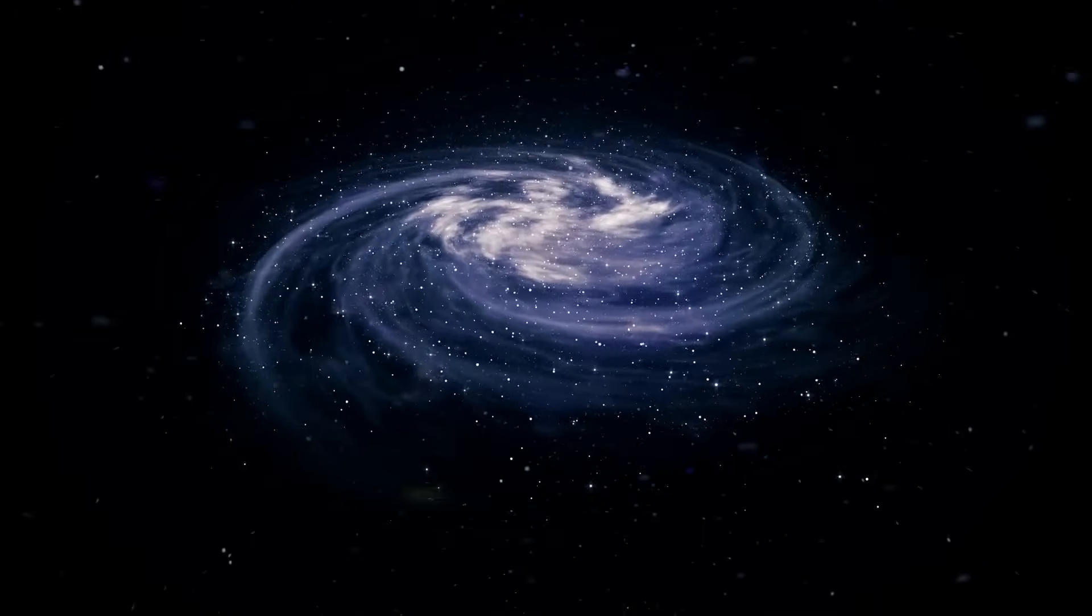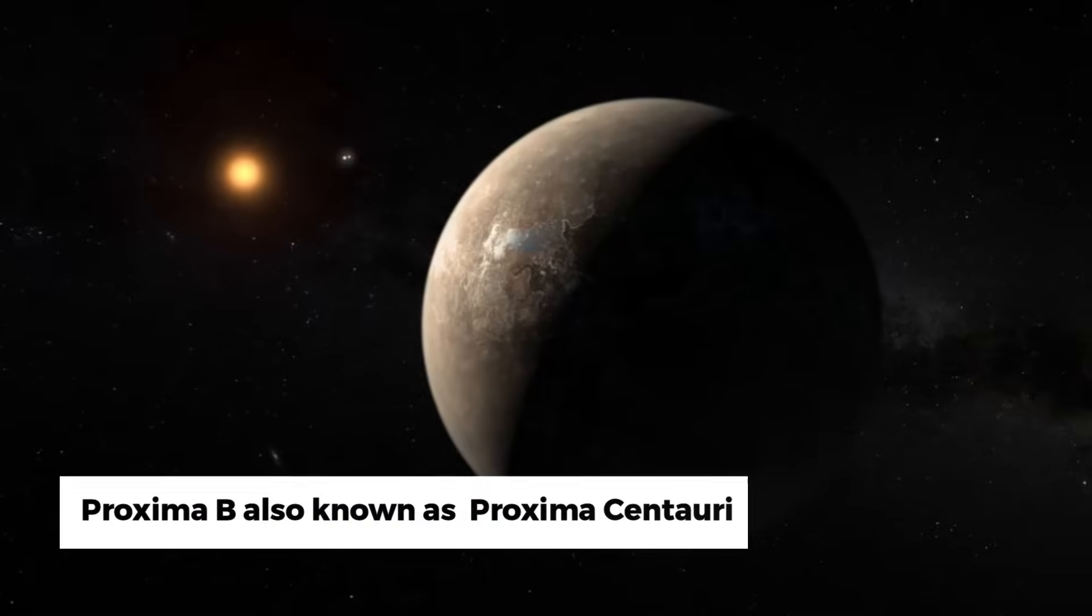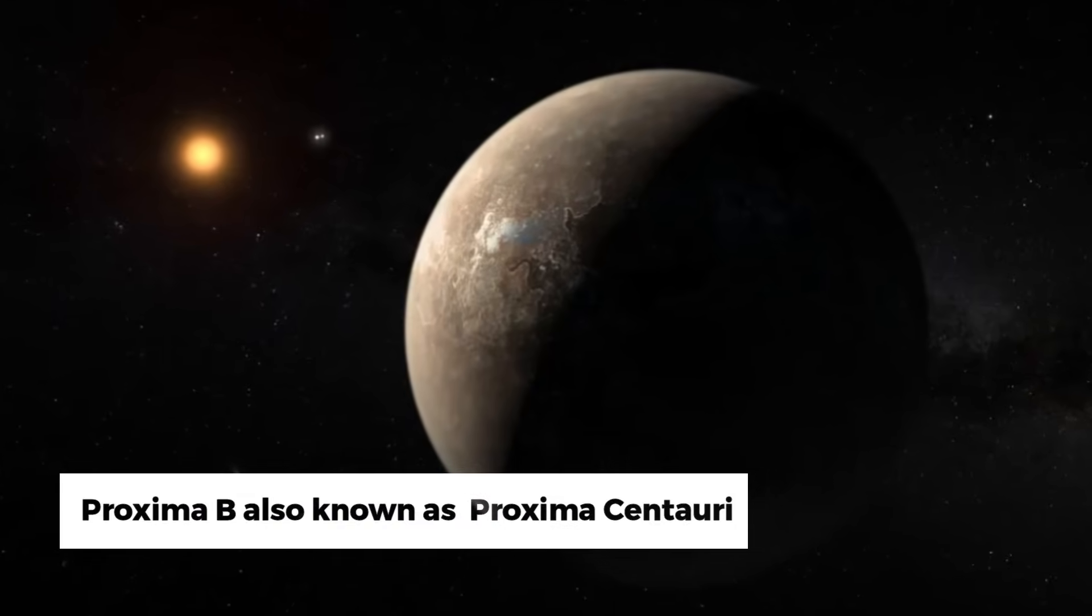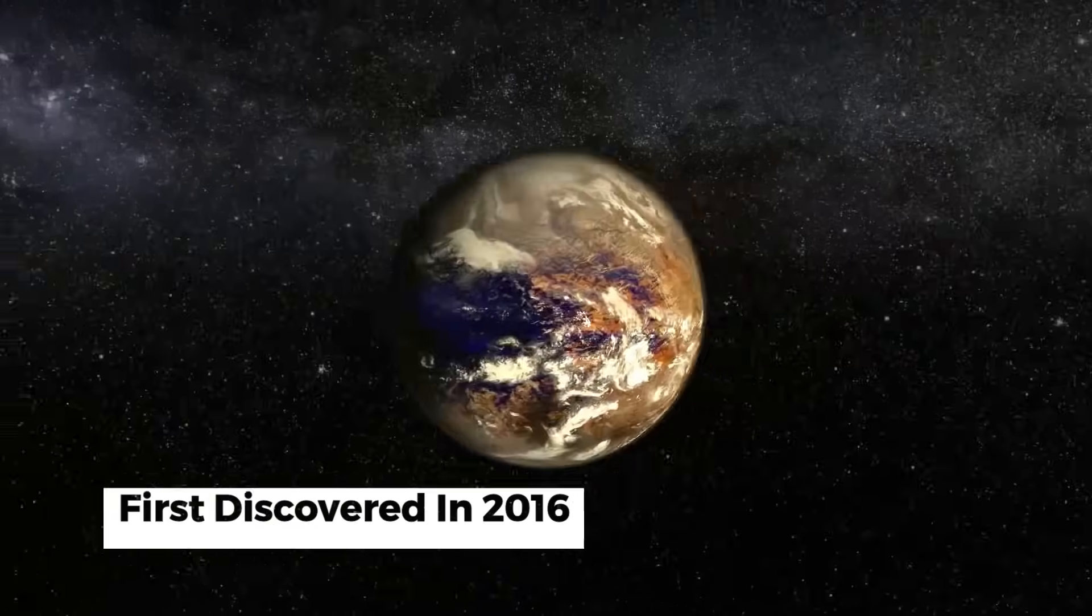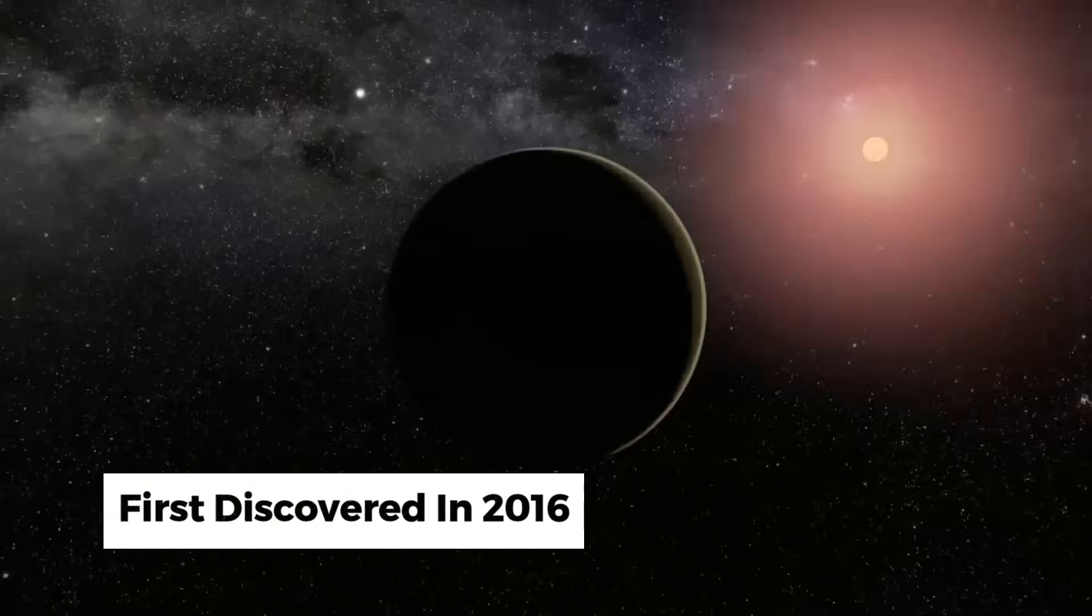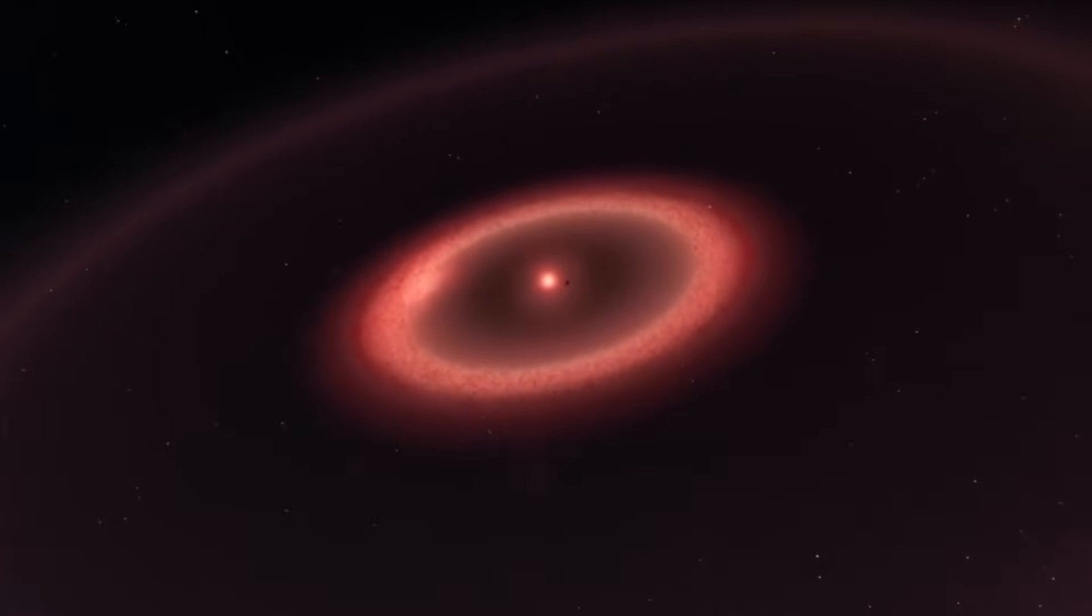In our galaxy alone, billions of planets might have potential for sustaining life. Proxima B, also known as Proxima Centauri, is a celestial gem in the Proxima Centauri system. It was first discovered in 2016 and has become one of the most studied exoplanets due to its proximity and potential for habitability.